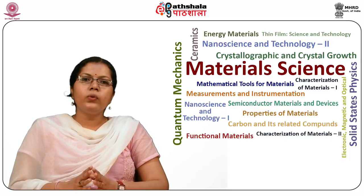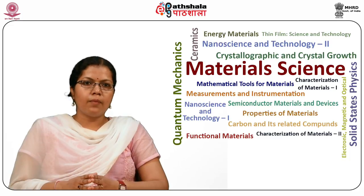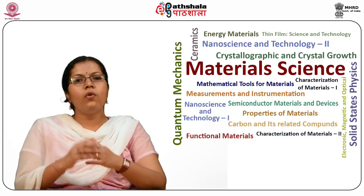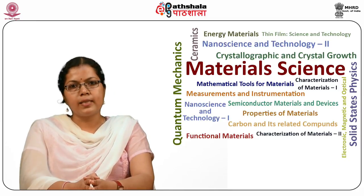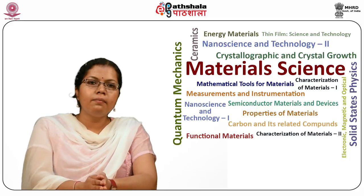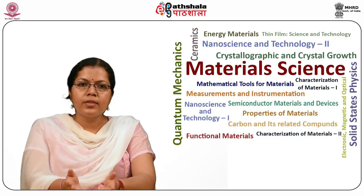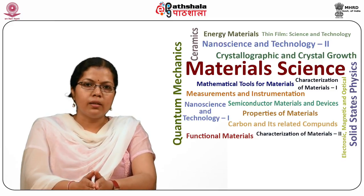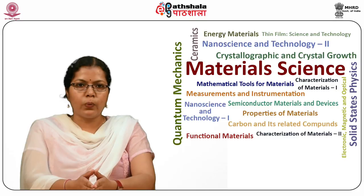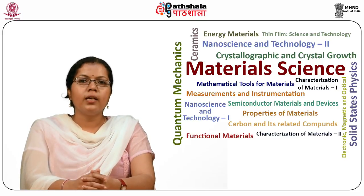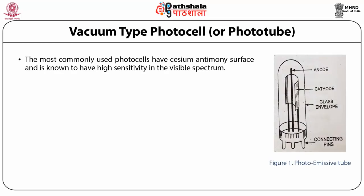Photo emissive cells, or phototubes, are of two types: vacuum type and gas filled type. Photomultiplier tubes also fall in the category of phototubes. Vacuum type photocells have a thin metal curved sheet with a concave surface coated with photo emissive material forming a cathode, and a rod mounted at the center of the cathode plate acts as the anode. This whole setup is enclosed in an evacuated glass tube. The most commonly used photocells have a cesium-antimony surface, known for high sensitivity in the visible spectrum.